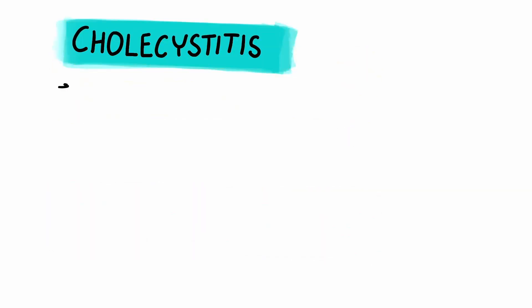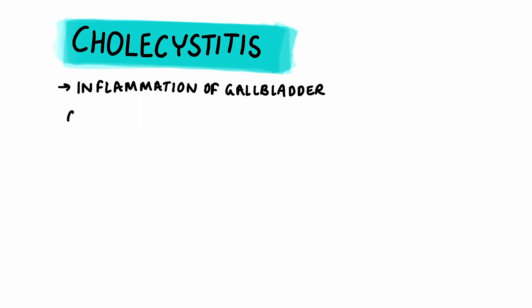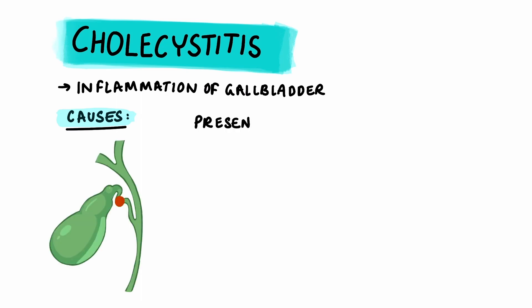Acute cholecystitis is the inflammation of the gallbladder. There are several different causes but the main cause is the blockage of the cystic duct or the neck of the gallbladder, which prevents the release of bile.